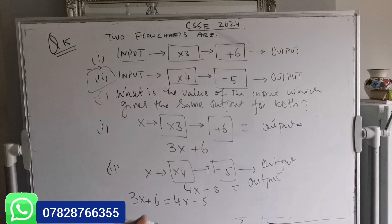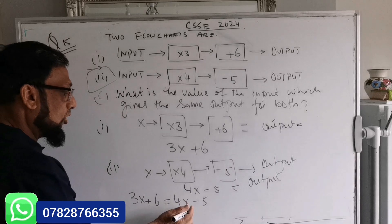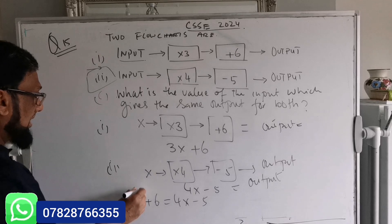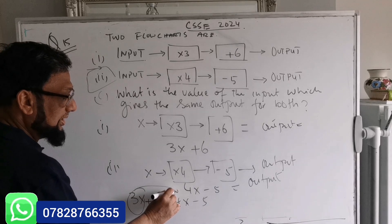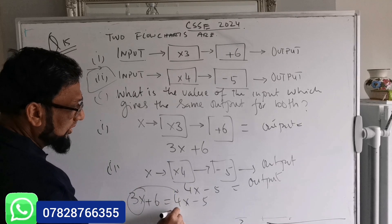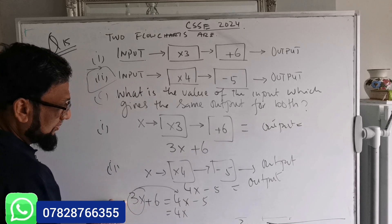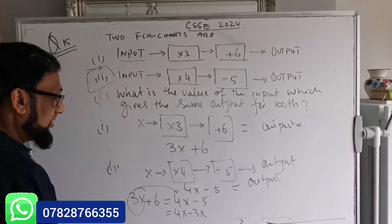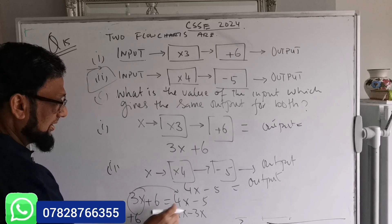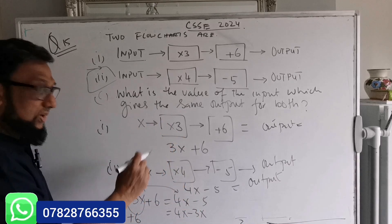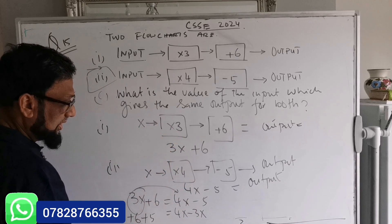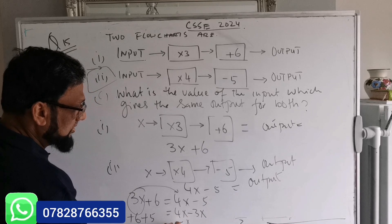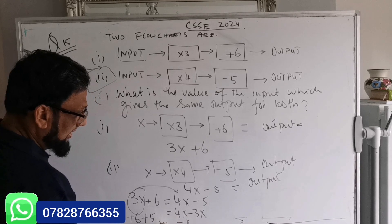Solving 3x + 6 = 4x - 5: move the lower x value to the higher side — 4x minus 3x gives x. Move +6 to the other side as -6... wait, move -5 across as +5: 6 + 5 = 11. So x equals 11.